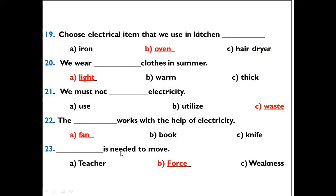Question 23: Dash is needed to move. Options: A) Teacher, B) Force, C) Weakness. The right option is force. Force is needed to move.